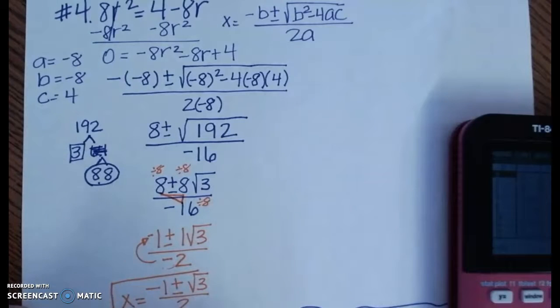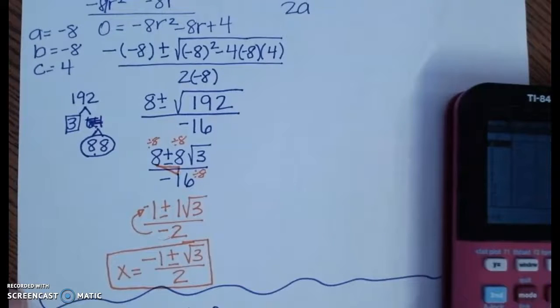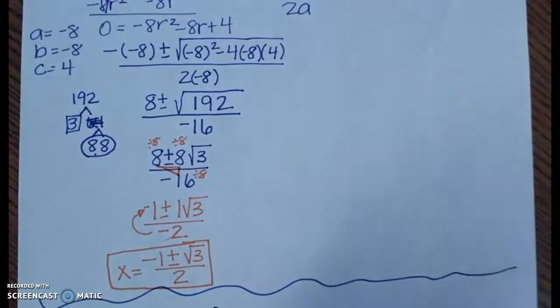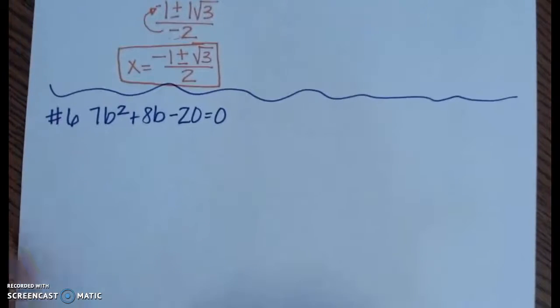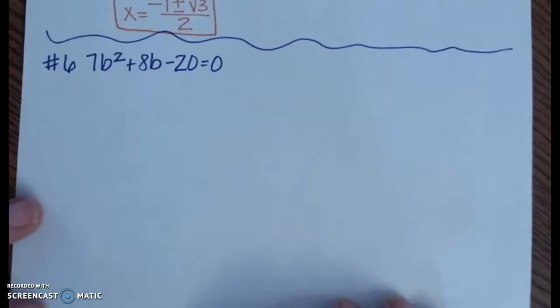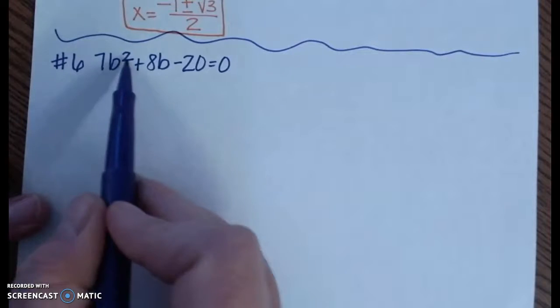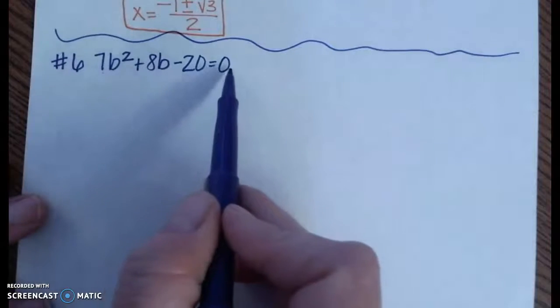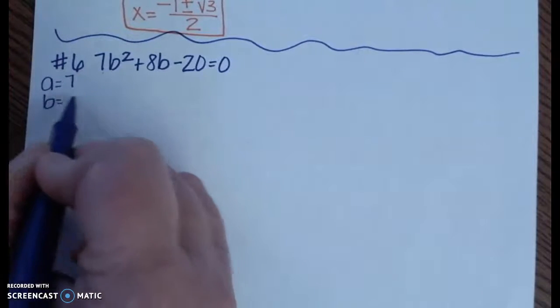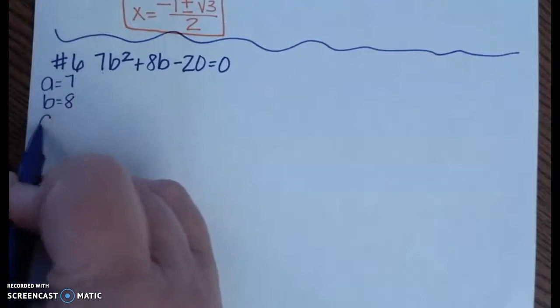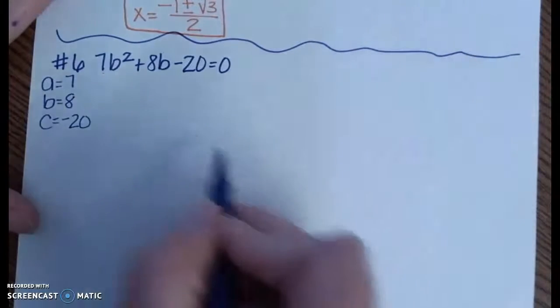So hopefully this was a helpful problem. If you have trouble with these, you can always stop and restart the video, which is a really good way to be watching this. So that was number 4. Let's go ahead and do number 6. So number 6 was nice because it's already set up in standard form. There's my ax² + bx + c = 0. So my a value is 7, b value is 8, and c value is negative 20.